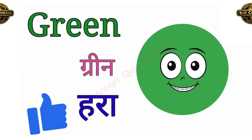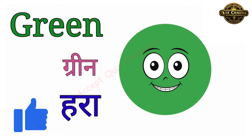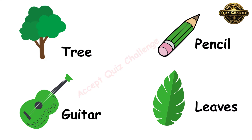This is the green color, G-R-E-E-N. Green means hara. Let's see the example of green color. Tree is green, pencil is green, guitar is green and leaves also is green.